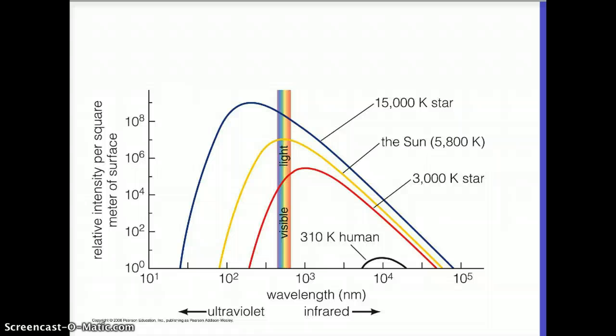Here's sort of approximation spectra for several different stars plus a human being down here. And what you will notice when you start comparing these is that the hottest star has a peak wavelength. The value on the x-axis where the peak happens for this one is kind of in the ultraviolet at a short wavelength. For the sun, the middle one, the peak is right here in the middle of visible light. For an even cooler star, the peak is now in the infrared and a human is even further into the infrared.